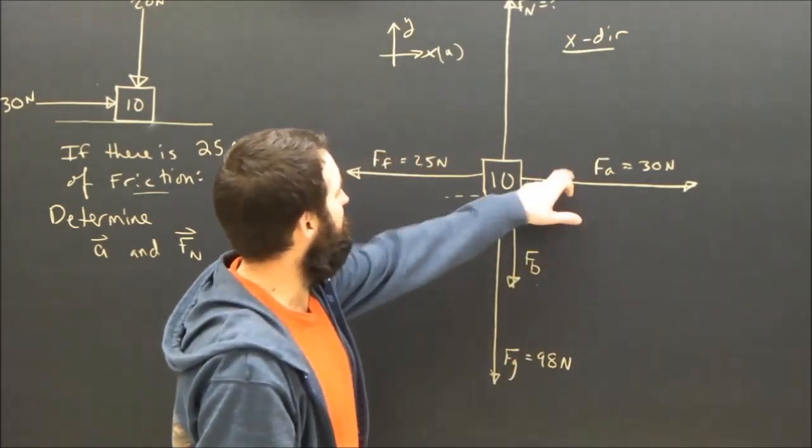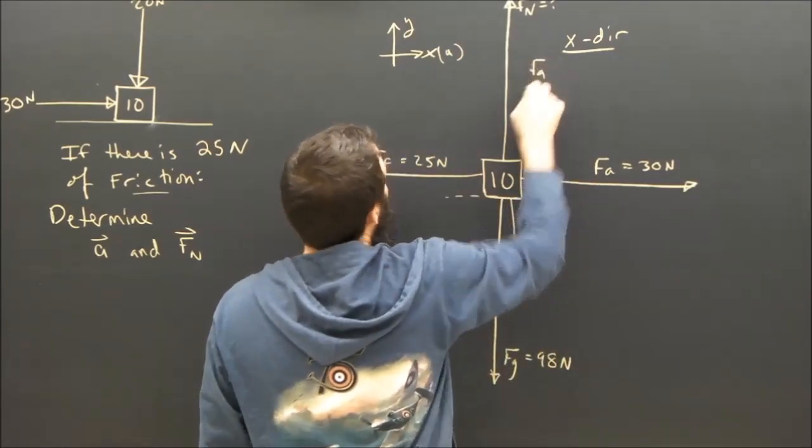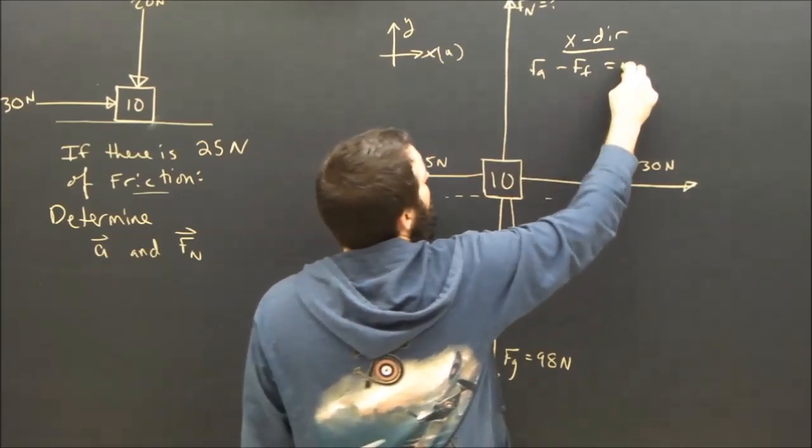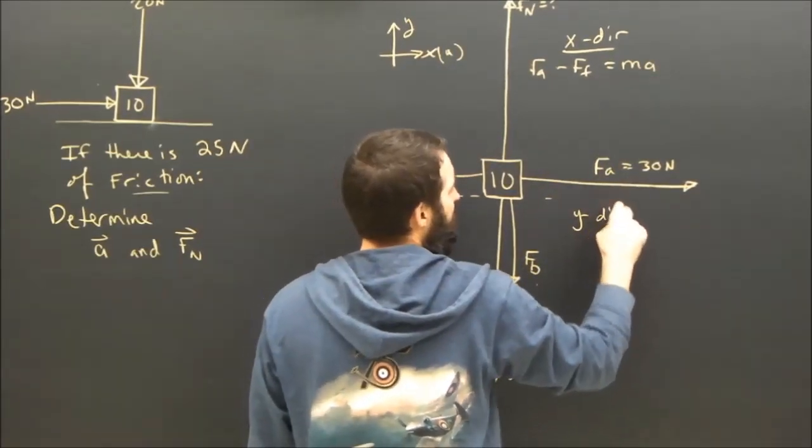The x-equation is going to say FA, which is positive. FA minus FF. FF is negative. Equals ma. And what's the y-direction equation?